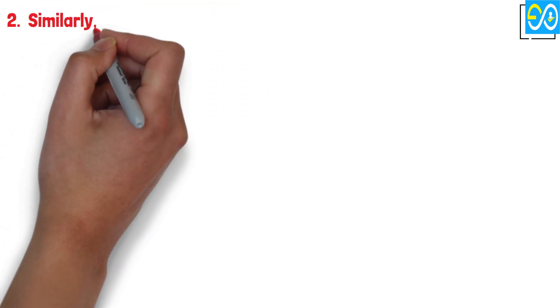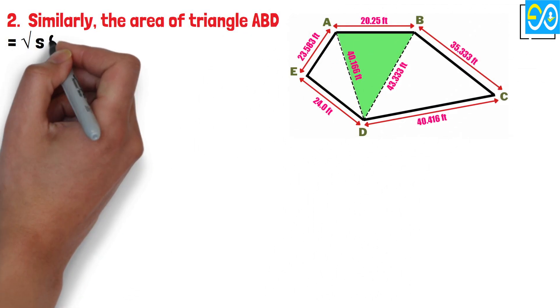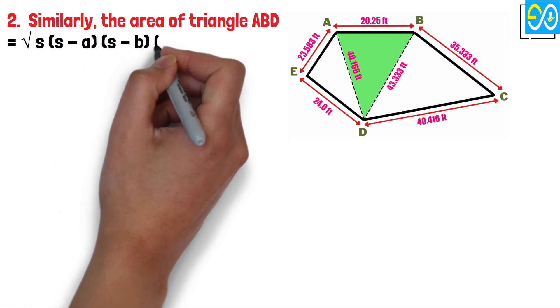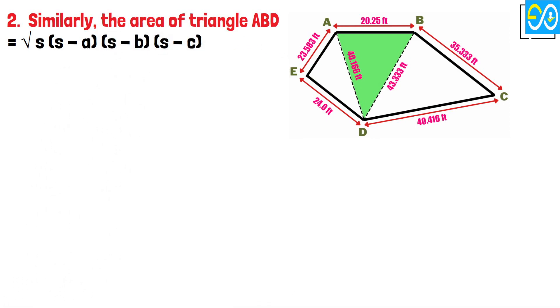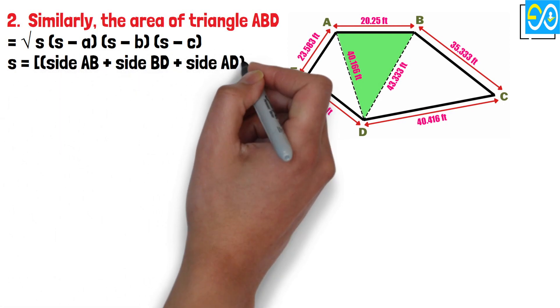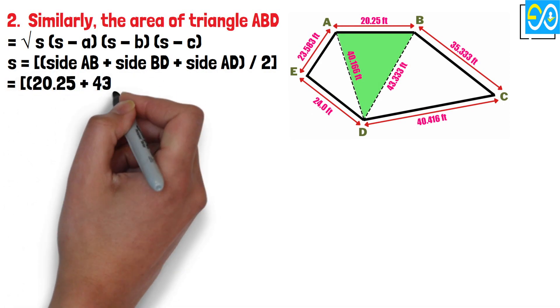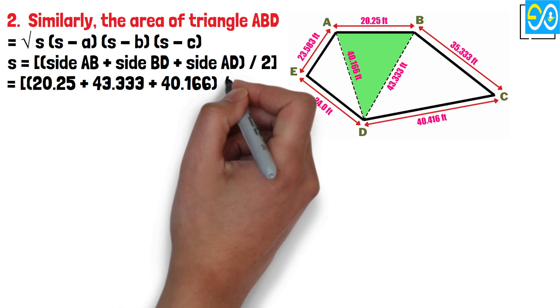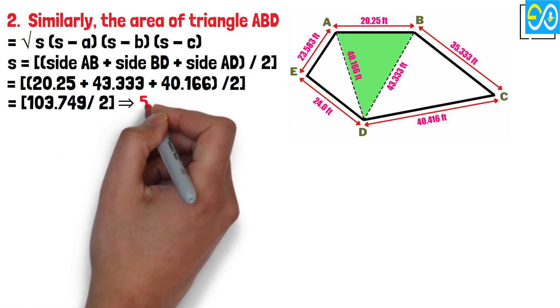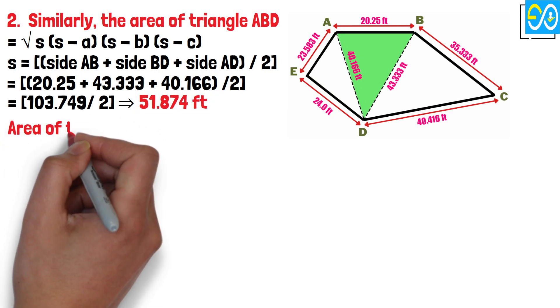2. Similarly, the area of triangle ABD equals square root S times (S minus A) times (S minus B) times (S minus C). S equals (side AB plus side BD plus side AD) divided by 2. Equals (20.25 plus 43.333 plus 40.166) divided by 2. Equals 103.749 divided by 2 equals 51.874 feet.